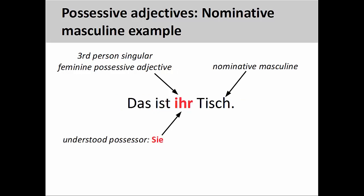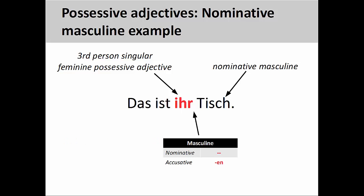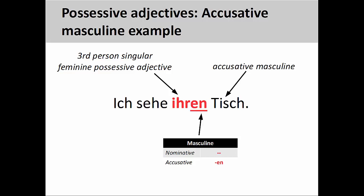Let's see what happens when we change the possessive adjective. In this sentence, the number and gender of the understood possessor, 'sie,' agrees with the number and gender of the possessive adjective — it is third person singular feminine. But since the masculine noun 'Tisch' is still in the nominative case, the ending of the possessive adjective must also be masculine nominative. And when the masculine noun is in the accusative, the ending for the possessive adjective must also be masculine accusative.